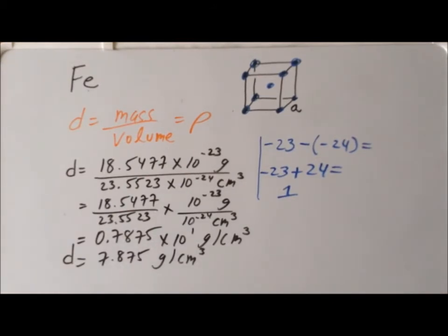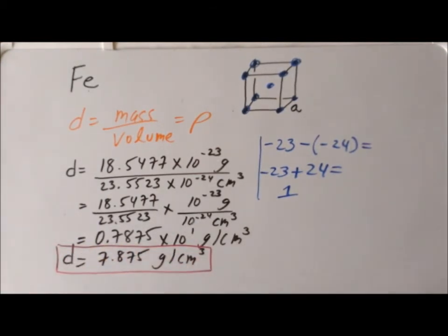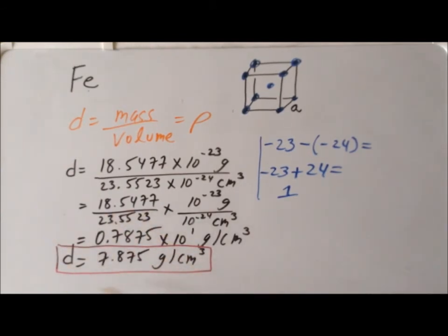Our last step, which we always perform, is a reasonableness check. The density of water is almost exactly 1 gram per cubic centimeter, and reasonable densities for metals on Earth range from a little less than 1 up to about 22 grams per cubic centimeter. Since 7.875 g/cm³ is safely within that range, we are confident we have accurately computed the density of iron. Thank you very much for your attention — don't forget to subscribe.